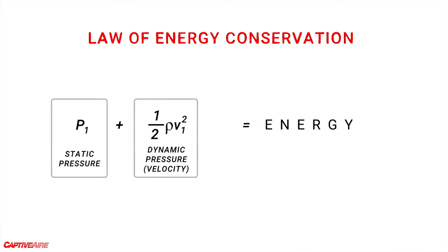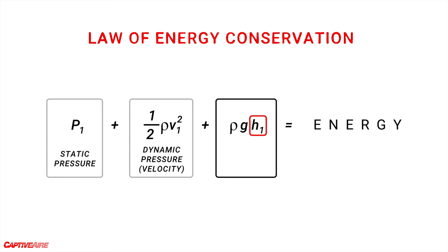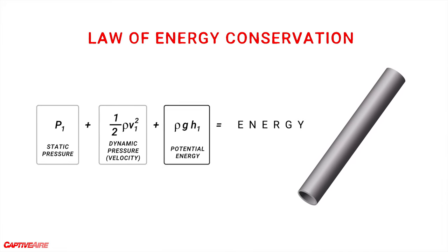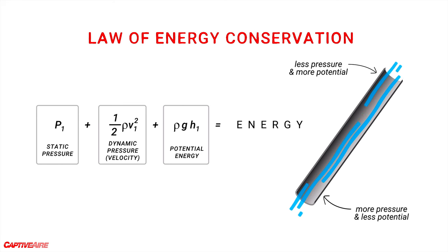Now let's look at the complete equation. The term rho factors in the density of the fluid. The third segment accounts for any change in height of the fluid — this height is potential energy that must be considered, and we use G to incorporate the gravitational force the fluid is experiencing. So generally, if we have a constant diameter pipe that rises, the resulting pressure at the top will be lower than at the bottom, because energy has been transferred into potential energy.